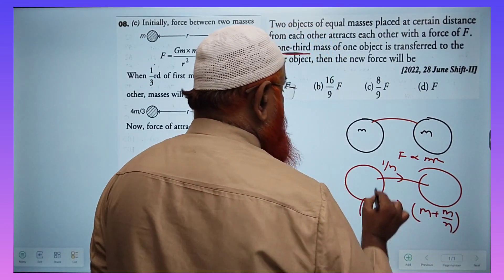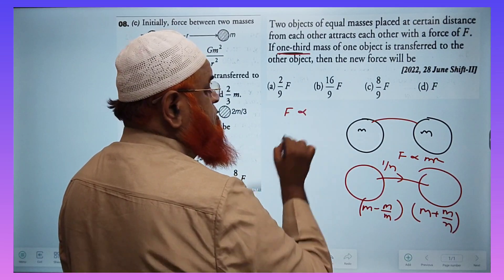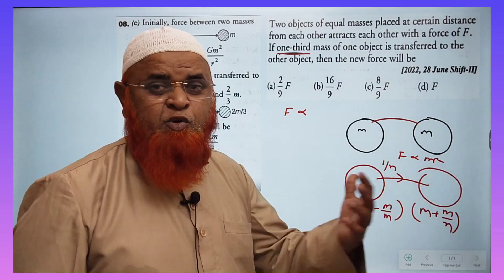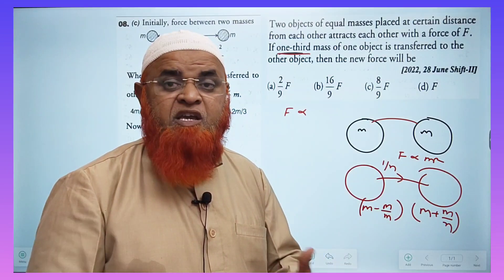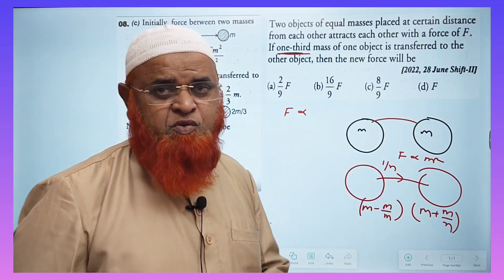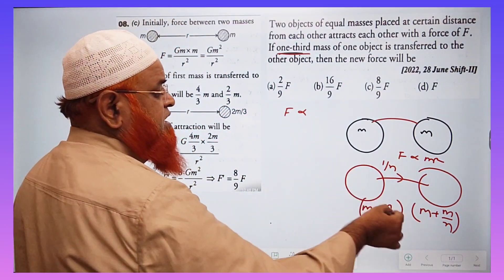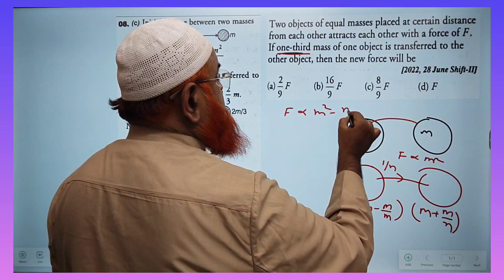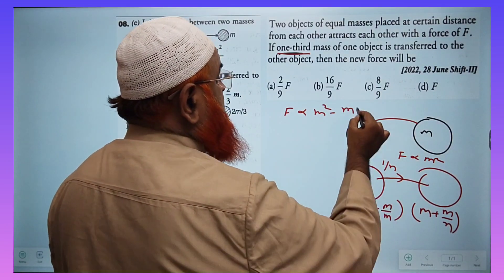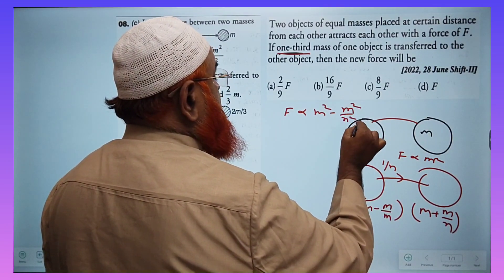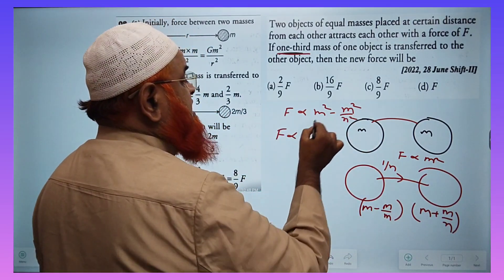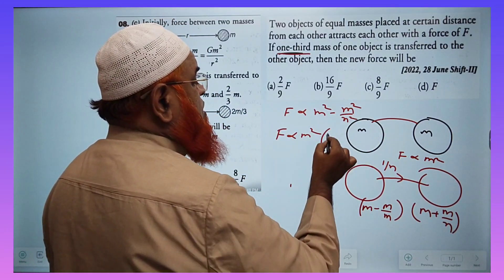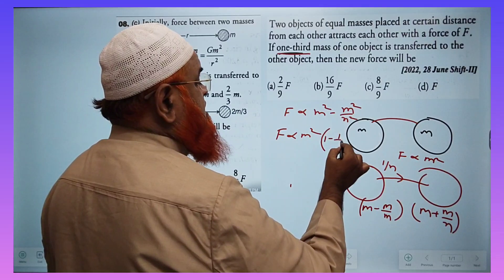You know that force is directly proportional to the product of the masses, and (a minus b) into (a plus b) equals a squared minus b squared. So force is directly proportional to m squared minus m squared by n squared. If I factor out m squared, what is left is one minus one by n squared.